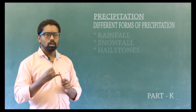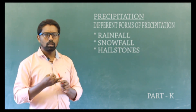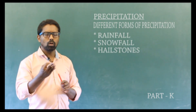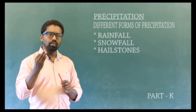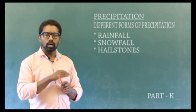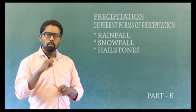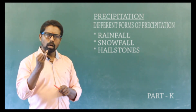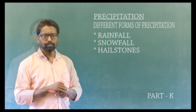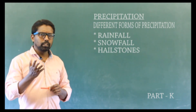The different forms of precipitation are: rainfall, snowfall, and hailstorms.